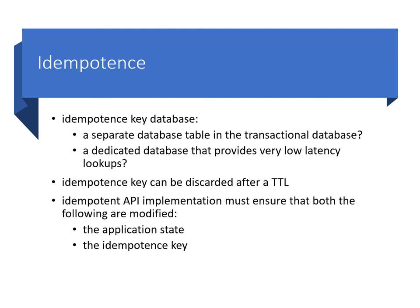The database used to store idempotence keys can be implemented in several ways — for example, as a separate database table or collection in the transactional database used for application data, or as a dedicated database providing very low latency lookups such as a simple key-value store. Unlike application data, idempotence keys don't have to be retained forever. Once a client receives an acknowledgement of success for an individual operation, the idempotence key can be discarded. The simplest way to achieve this is to remove idempotence keys from the store after a specific time period such as 60 minutes or 24 hours, depending on application needs and request volumes.